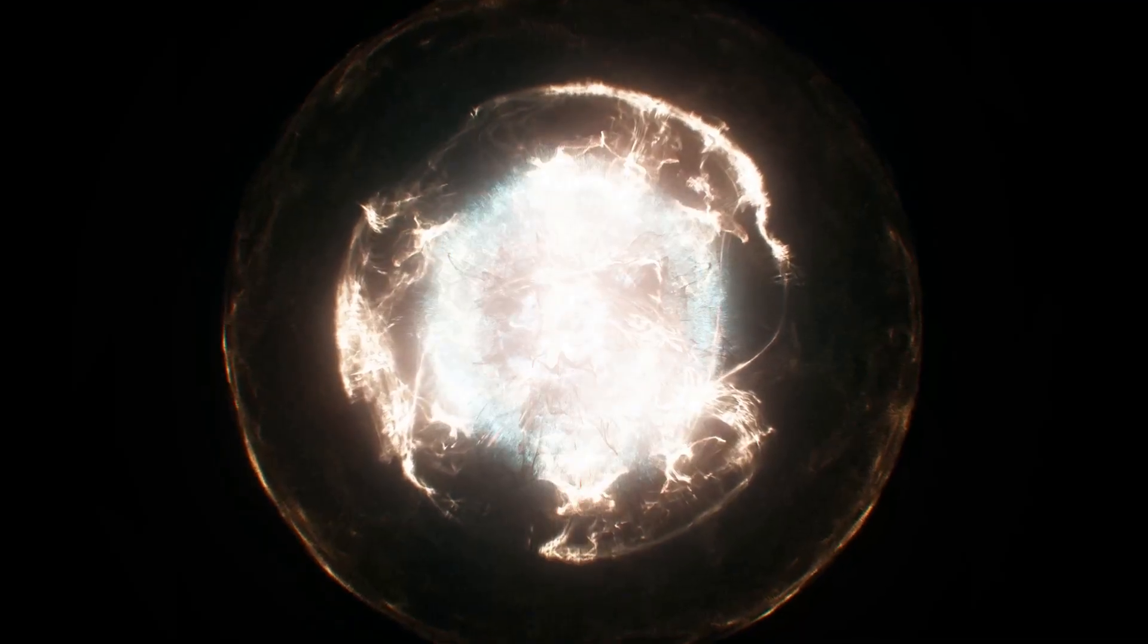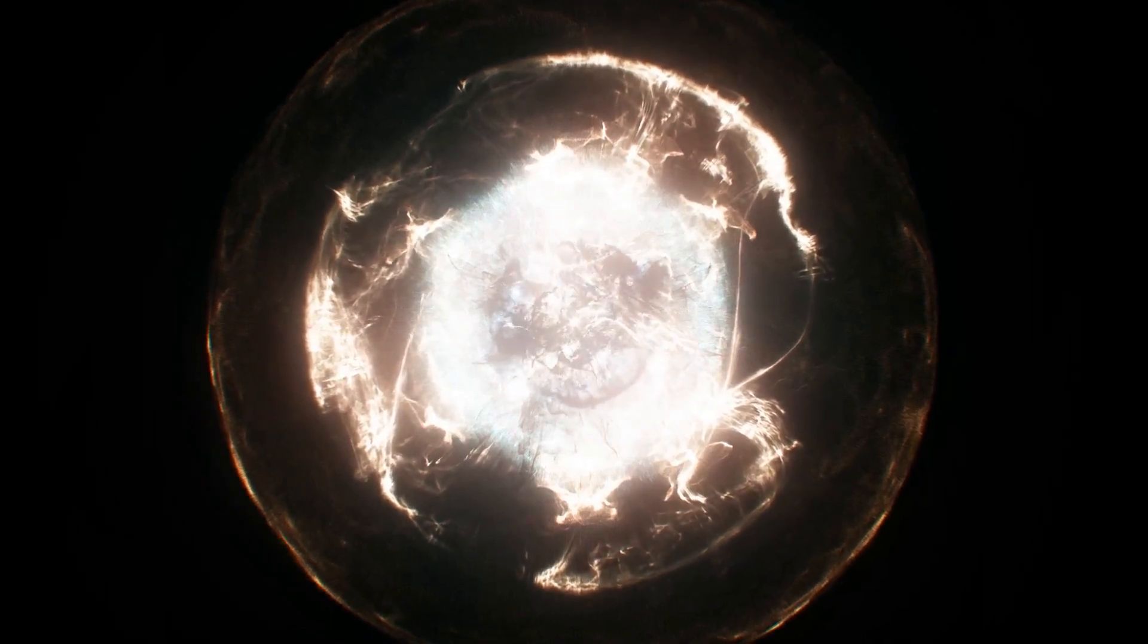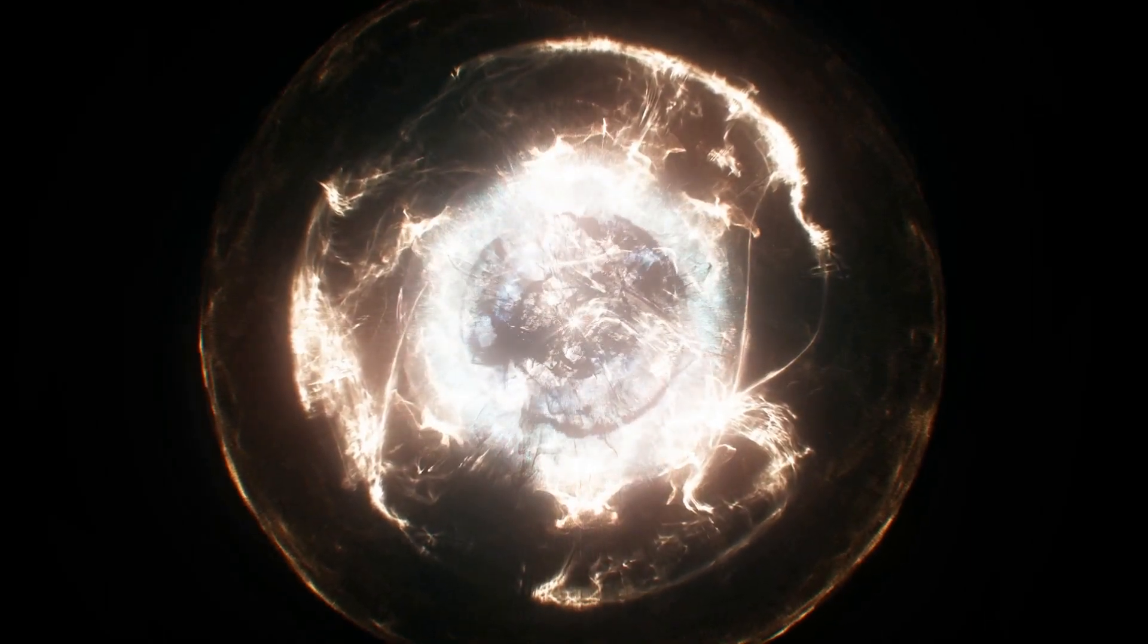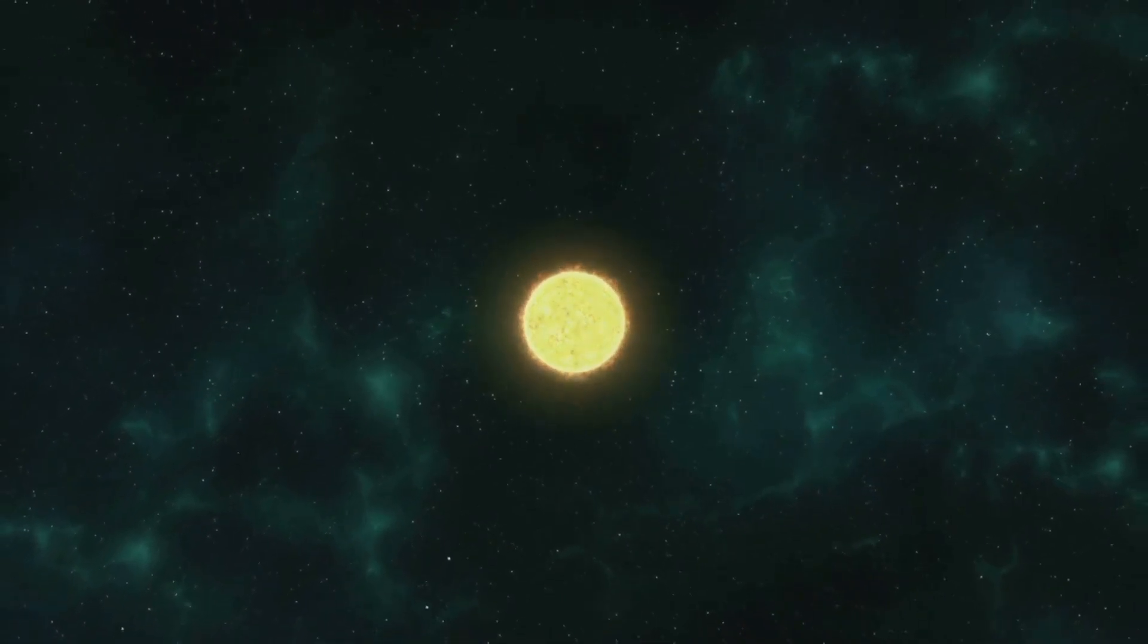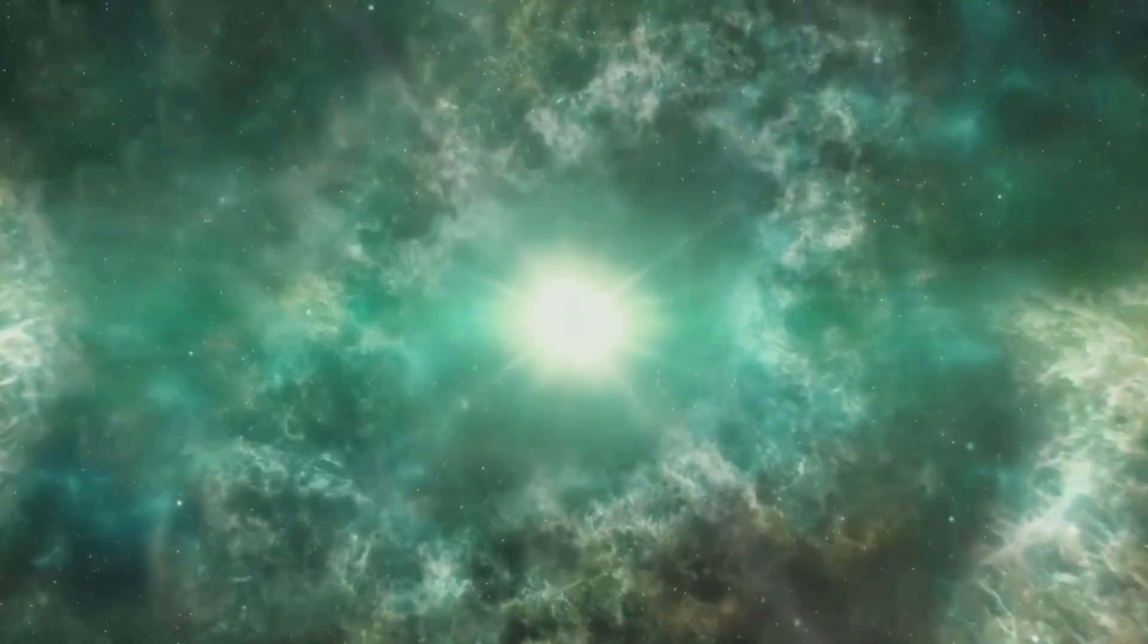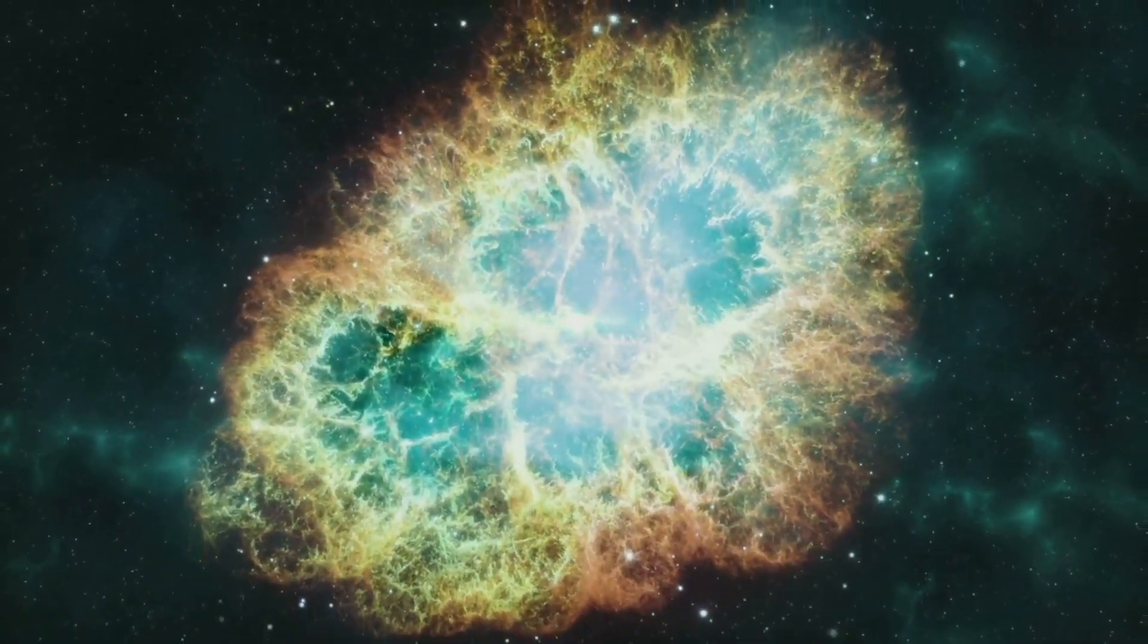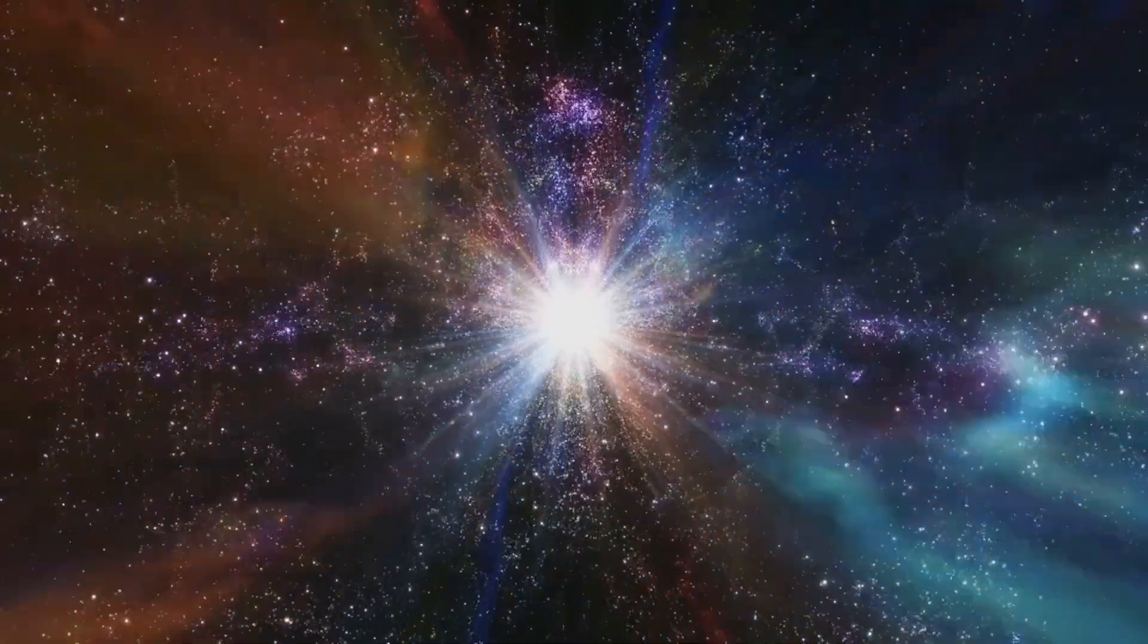As the protostar matures, it becomes hot enough to ignite nuclear fusion, transforming it into a main sequence star like our sun. Over billions of years, the star exhausts its hydrogen fuel. Without this energy source, gravity causes the star to contract until, in a dramatic twist, it swells into a red giant.